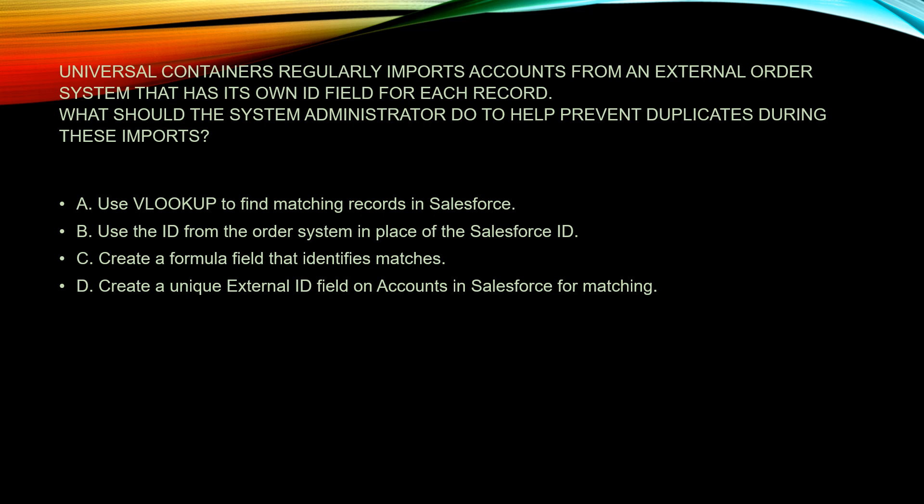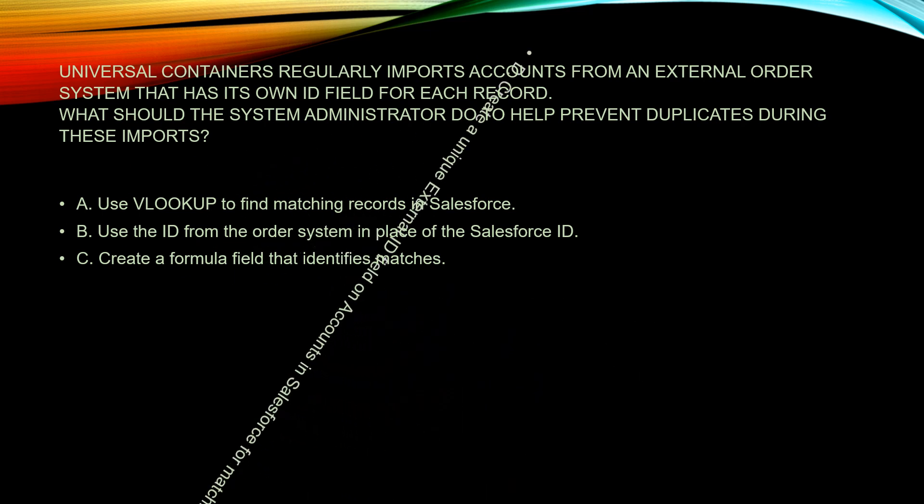Use a VLOOKUP to find matching records — VLOOKUP is totally an Excel thing; we don't use it in Salesforce, so that's incorrect. Use the ID from the order system in place of the Salesforce ID — you can use an external ID field that contains records, but you don't want to use it in place of the Salesforce ID, so that one is out. Create a formula field that identifies matches — why would you ever do that when there's a much easier option, which is D. Create a unique external ID field on accounts in Salesforce for matching — when you're using your data loader, you can do exactly that. So it's D, and we are correct.